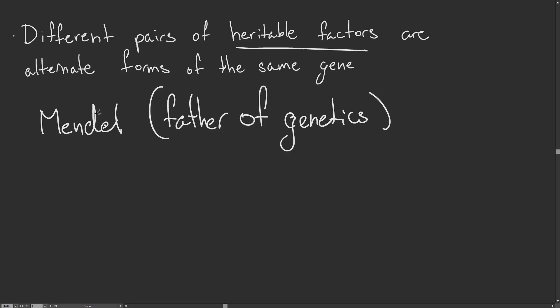When Mendel first started looking at different heritable factors, he looked at pea plants and would cross them, meaning he would take two parents and see what the offspring looked like. He worked with different colors and stem sizes, crossing two tall parents, two short parents, or a short and a tall parent.